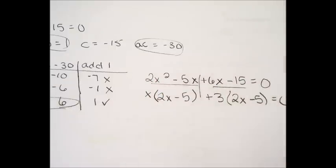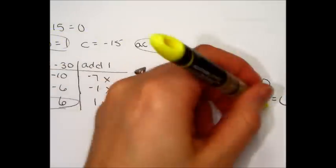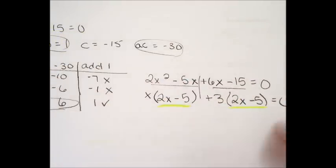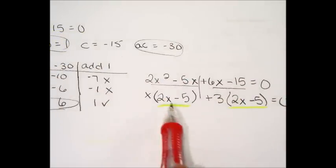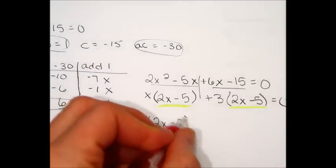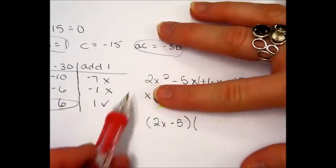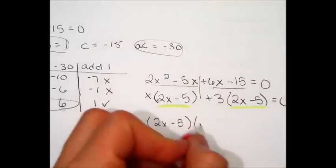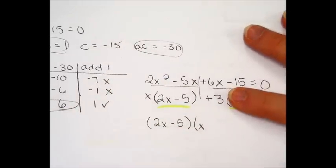You should notice now, your parentheses do match. So you're going to factor this out to the very front: 2x minus 5. What will you be left with? You'll be left with that x and you'll be left with that 3.